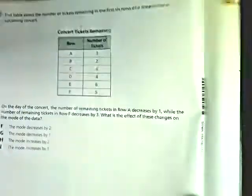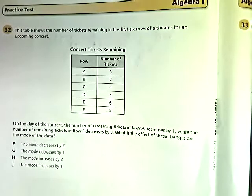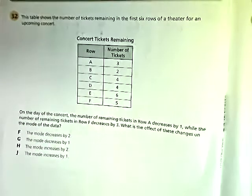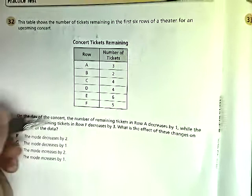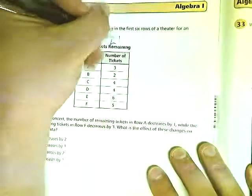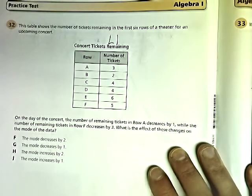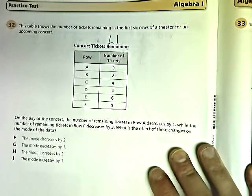Here's 32. 32 says, this is the number of tickets remaining in the first six rows of a theater for an upcoming event. It says, on the day of the concert. So this is my L1. On the day of the concert, the number of tickets remaining in row 3 decreases by 1.